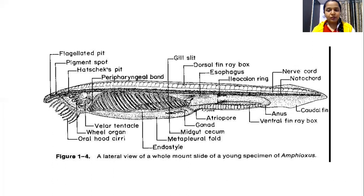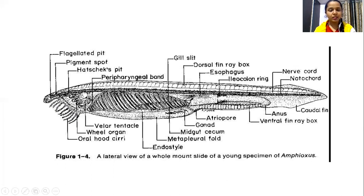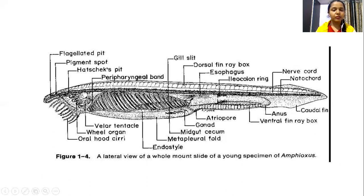The body of the amphioxus can be distinguished into anterior and posterior regions. In the anterior end, there is a projected protrusion called the rostrum. Below the rostrum we can see the oral hood, which is a feeding organ. The oral hood is provided with numerous small sensory tentacles — slender tentacles called oral cirri. The anterior and posterior ends of the body are tapering, and it looks like a lancet.